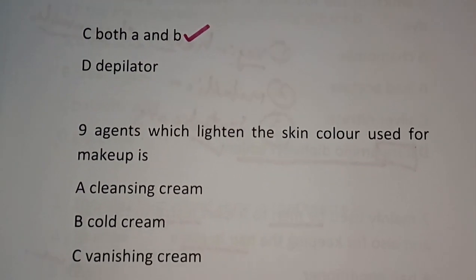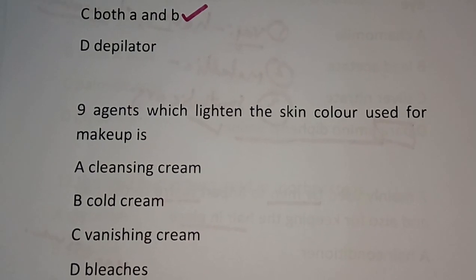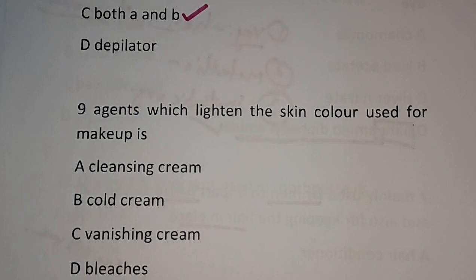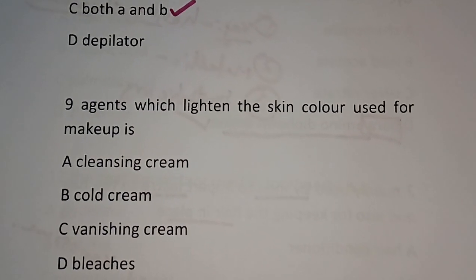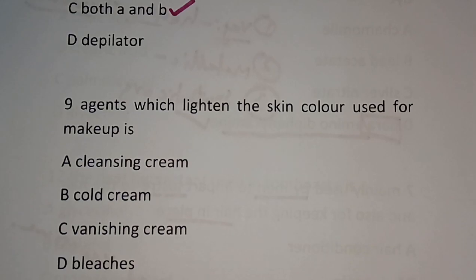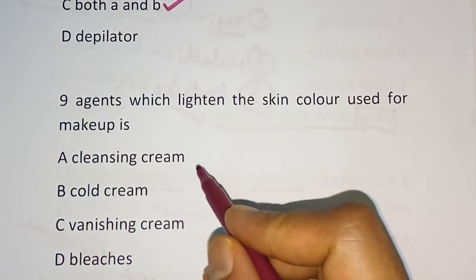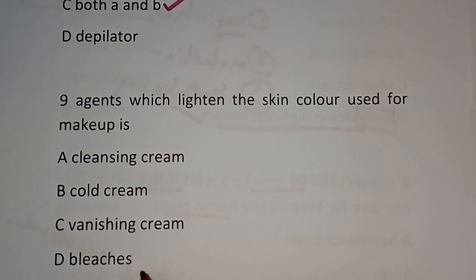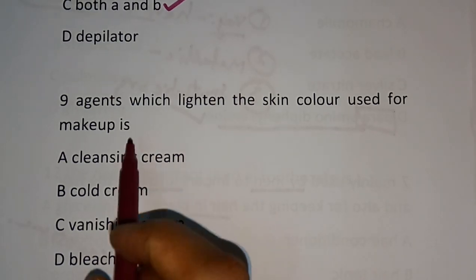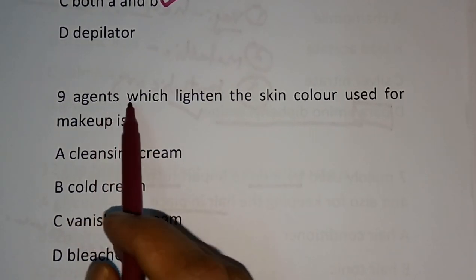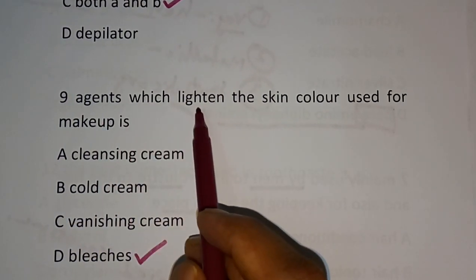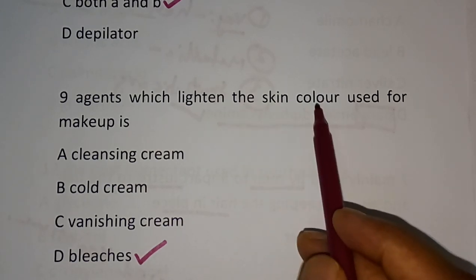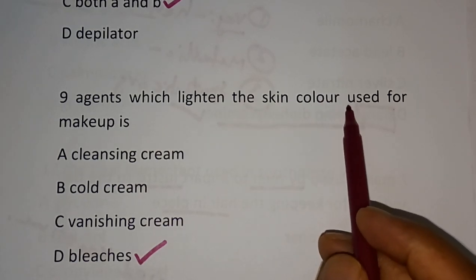Question number 9: Agents which lighten the skin color and are used for makeup — Cleansing cream, Cold cream, Vanishing cream, or Bleaches? The correct answer is Bleaches. Bleaches are the agents which lighten the skin color.